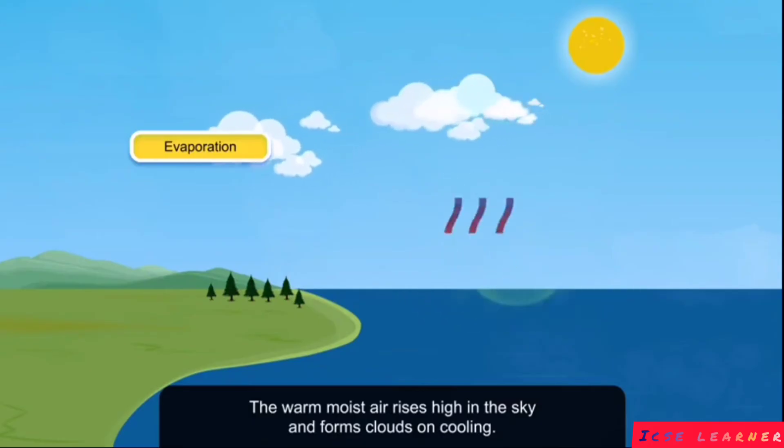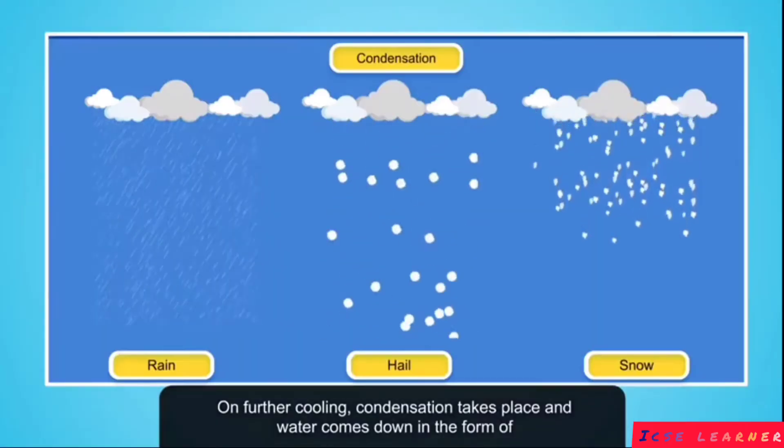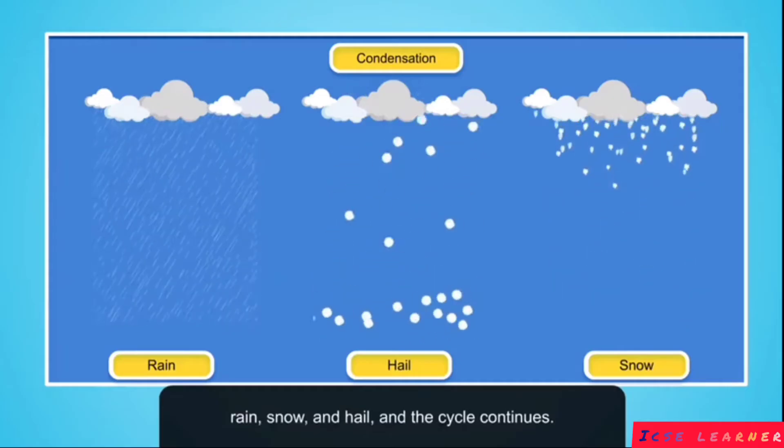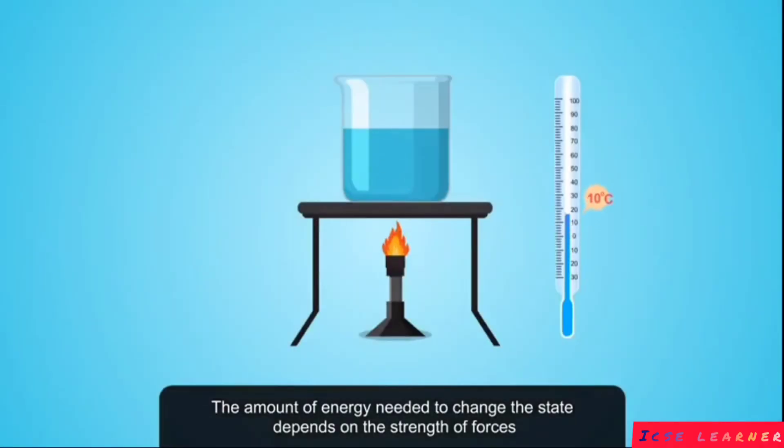The warm moist air rises high in the sky and forms clouds on cooling. On further cooling, condensation takes place and water comes down in the form of rain, snow, and hail, and the cycle continues.